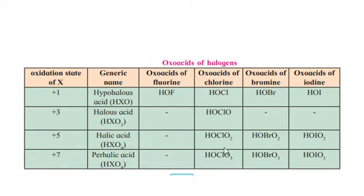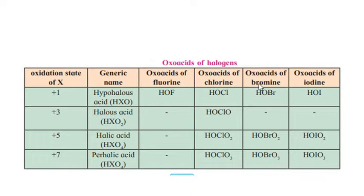Chlorine forms all four types of oxoacids. Bromine forms hypobromous acid, bromic acid, and perbromic acid, but does not form bromous acid. Iodine also forms three types of oxoacids but does not form iodous acid.